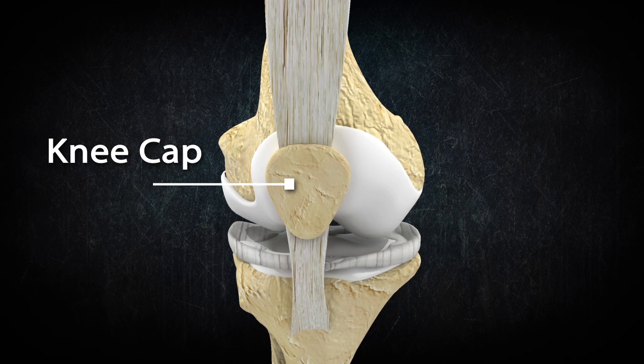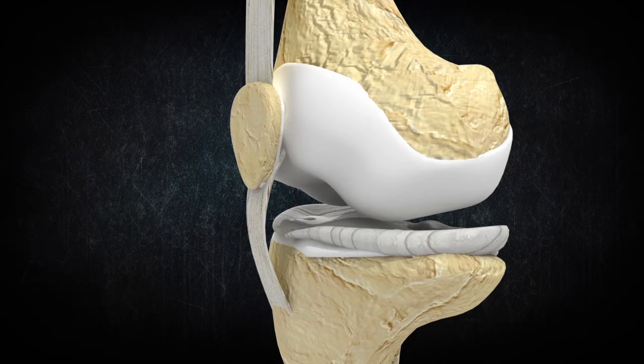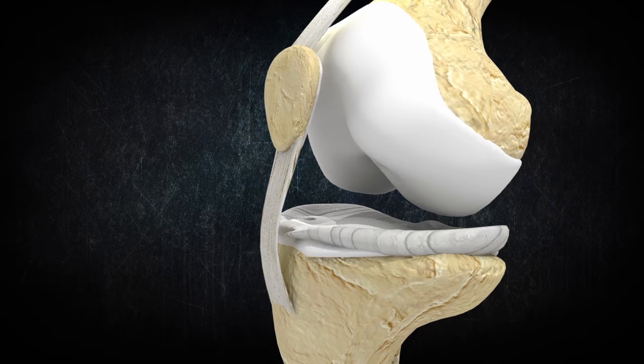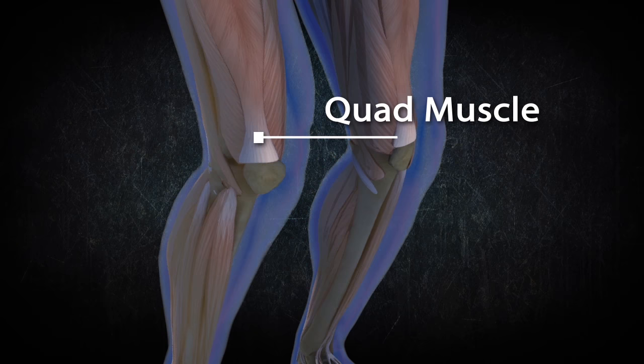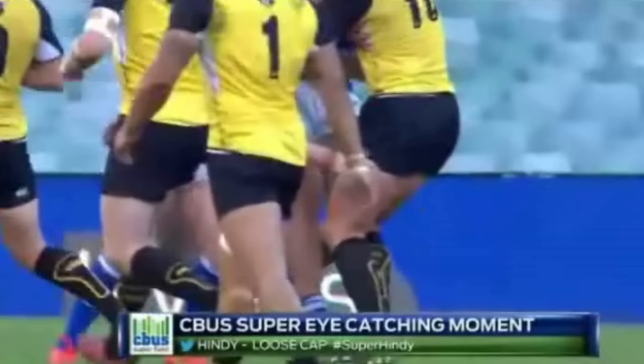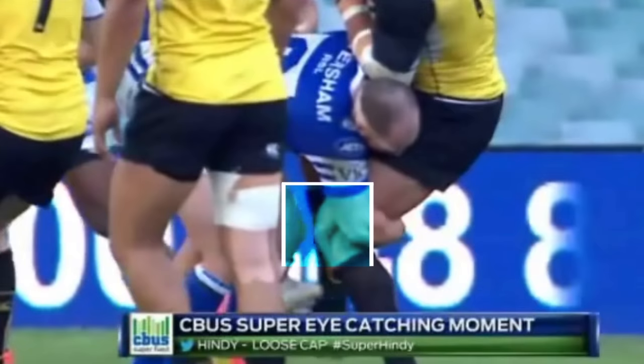The patella, or kneecap, lies in front of the knee joint. It glides up and down a groove called the patellofemoral groove at the front of the thigh bone and femur. As the knee bends, the patella is attached to the quadriceps muscle and acts to increase the leverage.